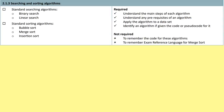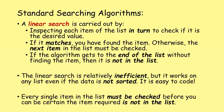The next section is 2.1.3 Searching and Sorting Algorithms. Starting with standard searching algorithms, we begin with a linear search. A linear search is carried out by inspecting each item of the list in turn to check if it's the desired value. If it matches, you have found the item. Otherwise, the next item in the list must be checked. If the algorithm gets to the end of the list without finding the item, then it is not in the list.